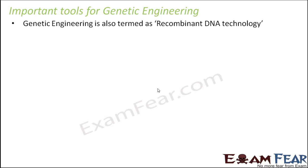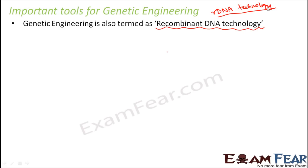Genetic engineering is also termed as recombinant DNA technology. This entire process of genetic engineering happens with the formation of rDNA: we extract a desired gene from one organism and introduce it into another, but not directly. We first extract the desired gene, then create a recombinant DNA with the help of a plasmid DNA, and then introduce that recombinant DNA inside the host organism. Formation of rDNA is very critical — without it, the process of genetic engineering cannot take place.